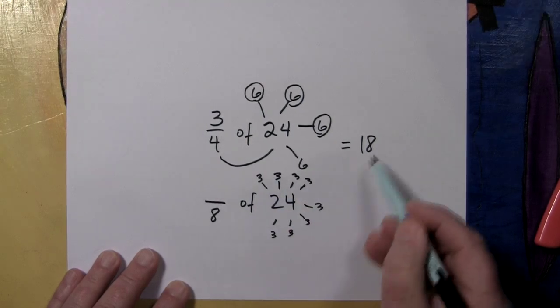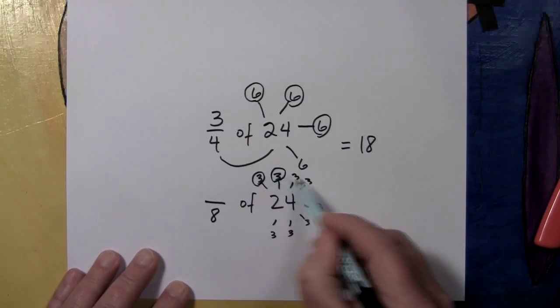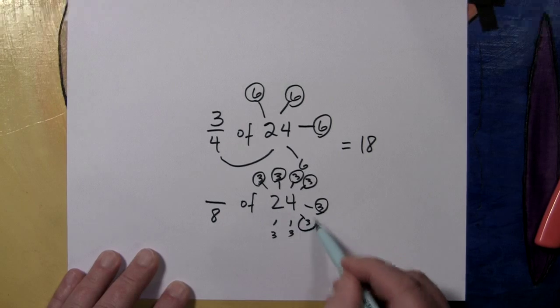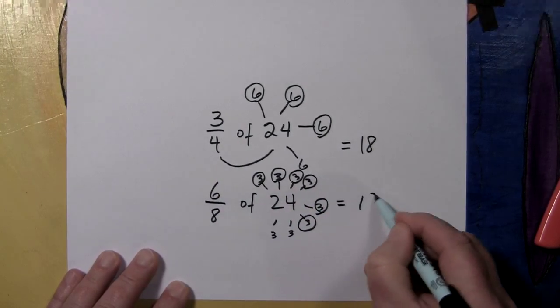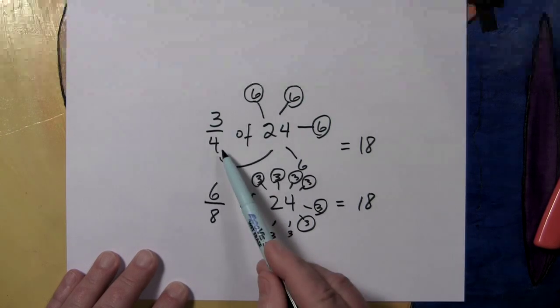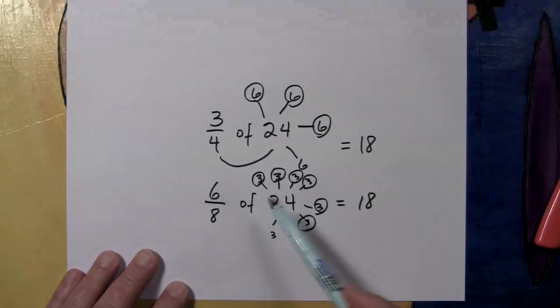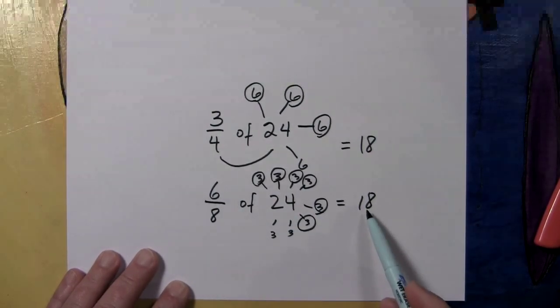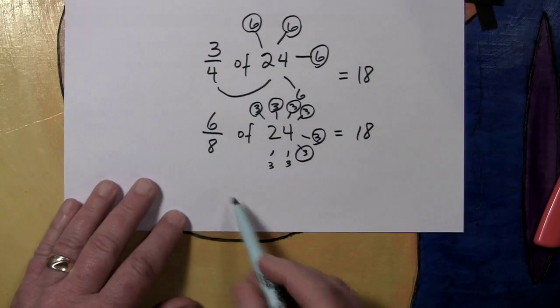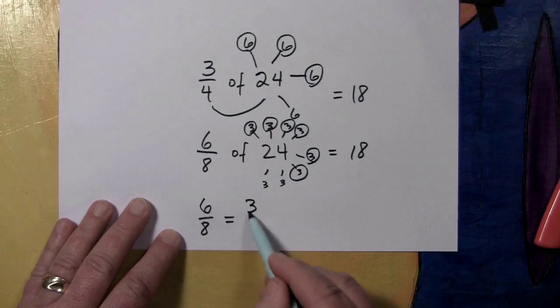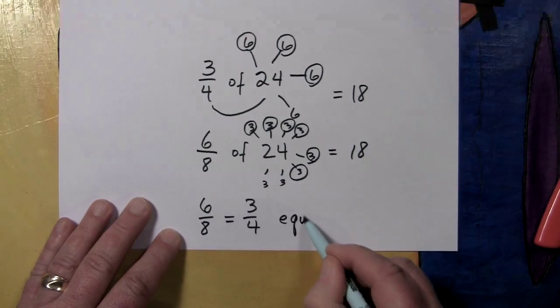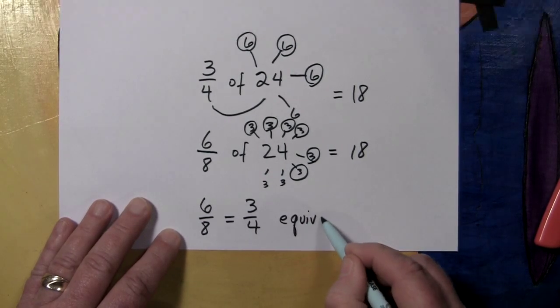How many of these threes do we need in order to have 18? Let's see, three, six, nine, twelve, fifteen, eighteen. We need six of them chosen to make 18. We can see that if we double the cutter, we have to double the chooser. And indeed then, six eighths does the same work exactly as three fourths, and we can say six eighths equals three fourths. And those are called equivalent fractions because they do the same work on 24.